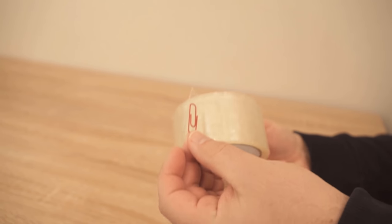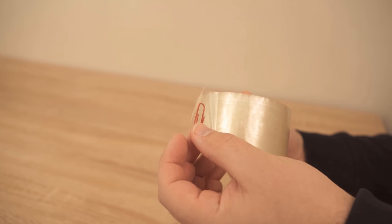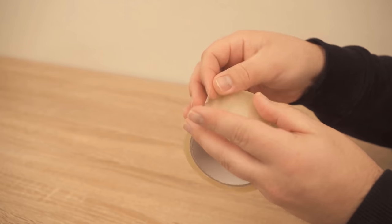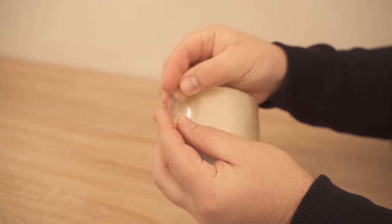In case you don't have a paperclip at home, there is another possibility which is also really easy. All you have to do is fold the end of the tape roll inwards, as you can see here.